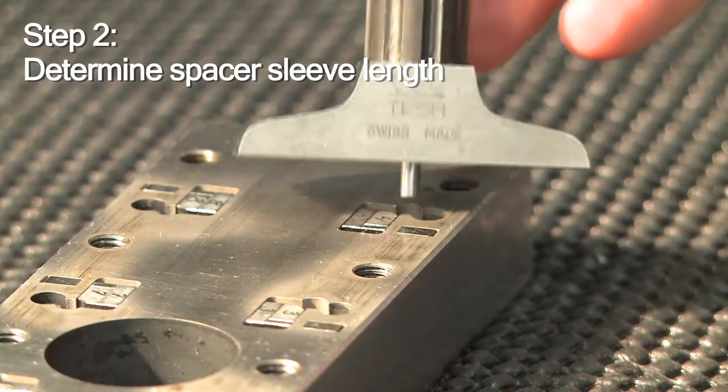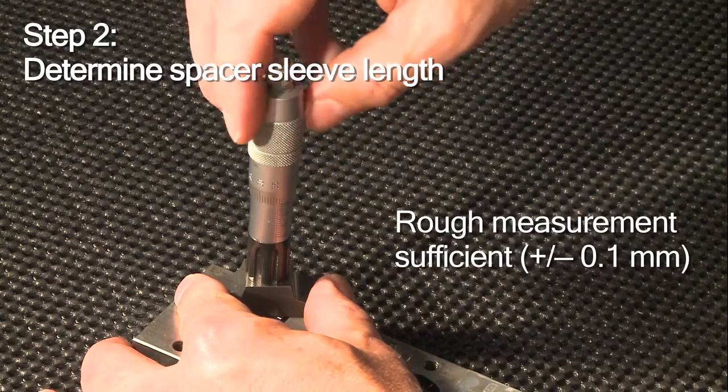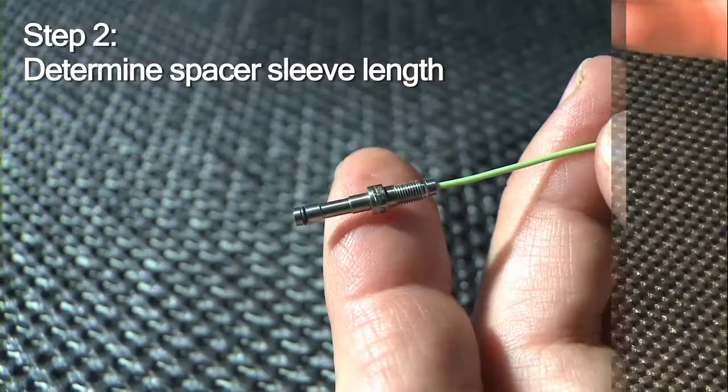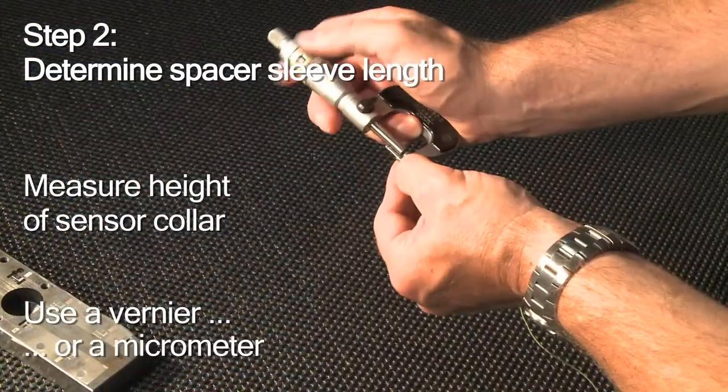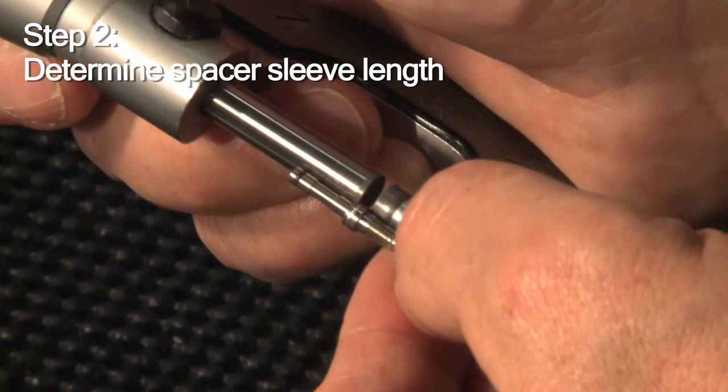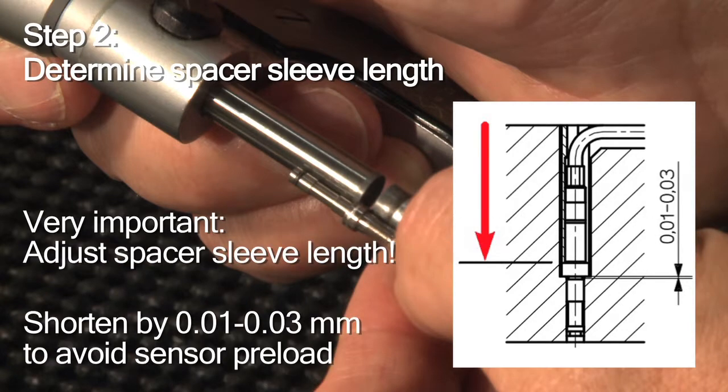Step 2. You determine the required length of the spacer sleeve using a vernier or a depth gauge. These types of sensors have collars. Next, you measure the height of the collar using a vernier or a micrometer. You determine the spacer sleeve length by a simple formula: hole depth minus sensor collar height. Allow an additional margin to make sure that the sensor is not preloaded.